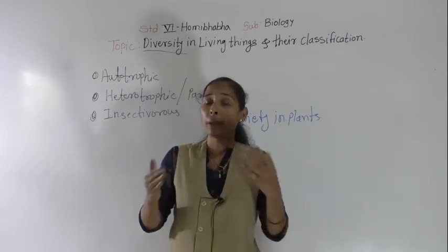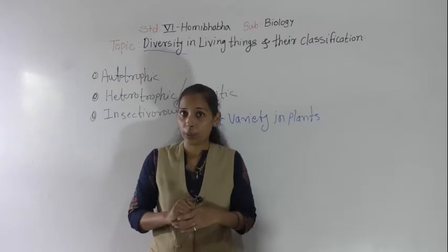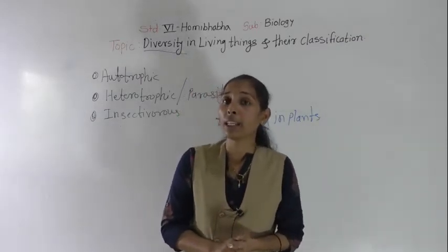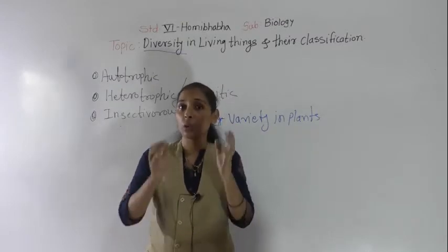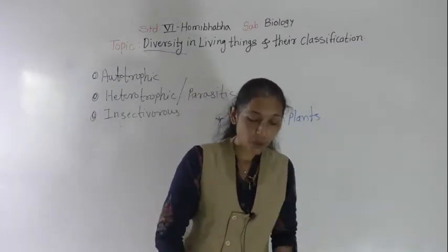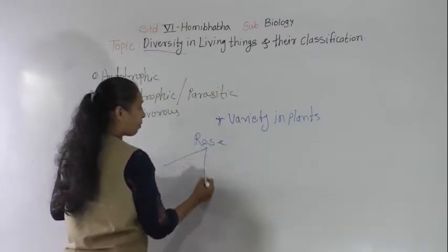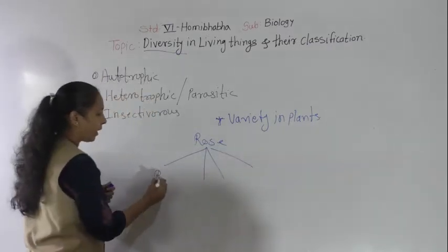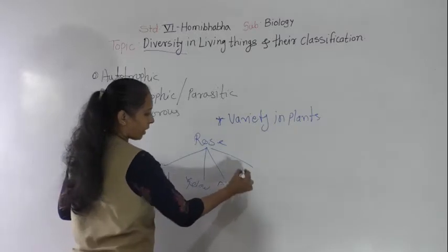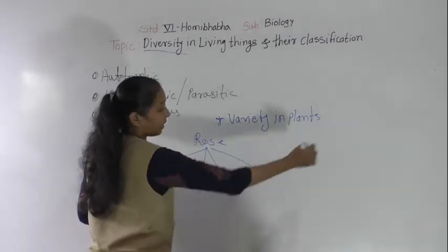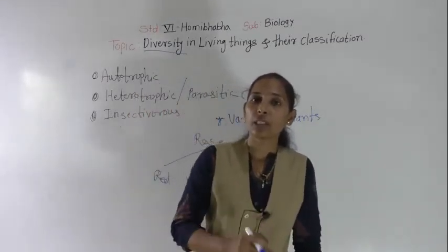Even within the same category of plant, there is a lot of variety. For example, if we take the rose, the rose is one type of plant but it has so many different varieties. We can see the red rose, yellow rose, pink rose, and also the white rose, and so on. There is a lot of variety present in the rose alone.